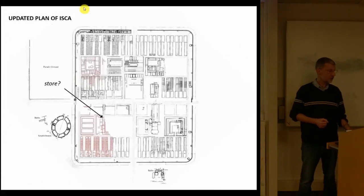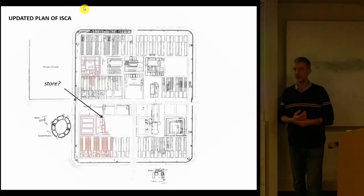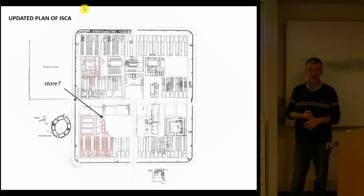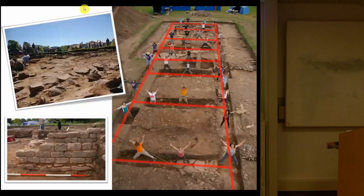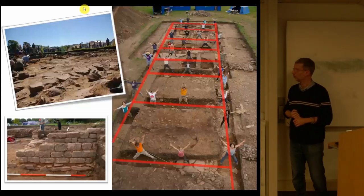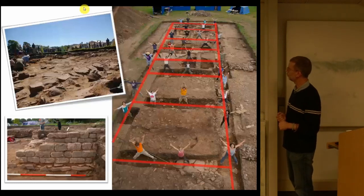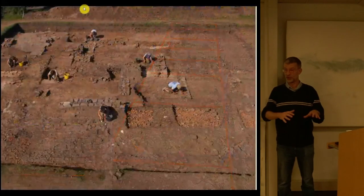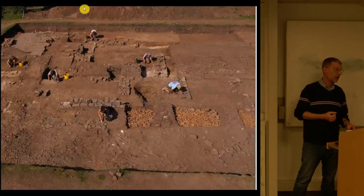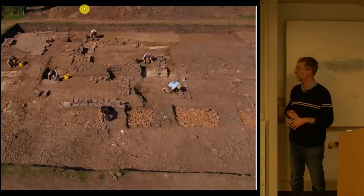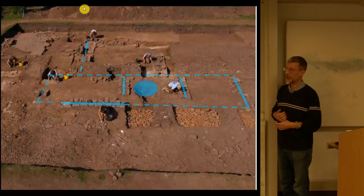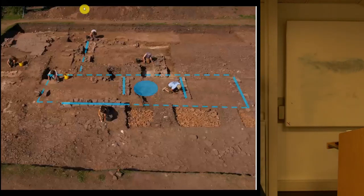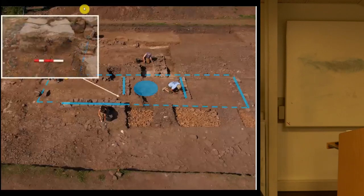My second and final example comes from my excavations at the legionary fortress at Caerleon. This is a plan of what the fortress known as Isca might have looked like, and in 2008 and 2010 I, together with Andy Gardner, excavated part of what we believe was a store building. This is the store building — or what's left of it — with our students, showing you where the front range of the store was. The store was constructed in stone around about 100 AD, stood for about two and a half centuries, before it fell down or was deliberately demolished — probably a combination of the two.